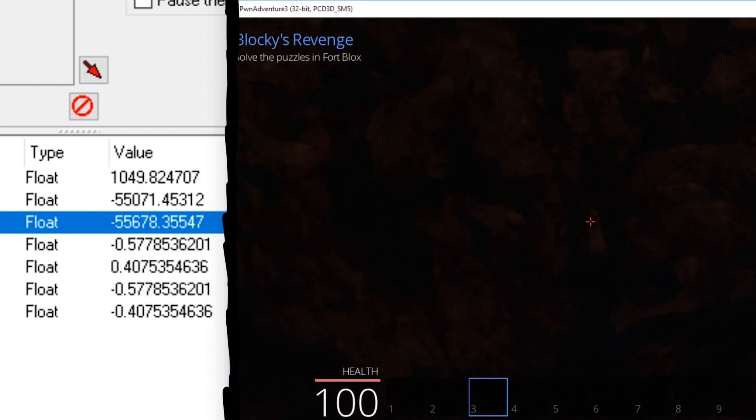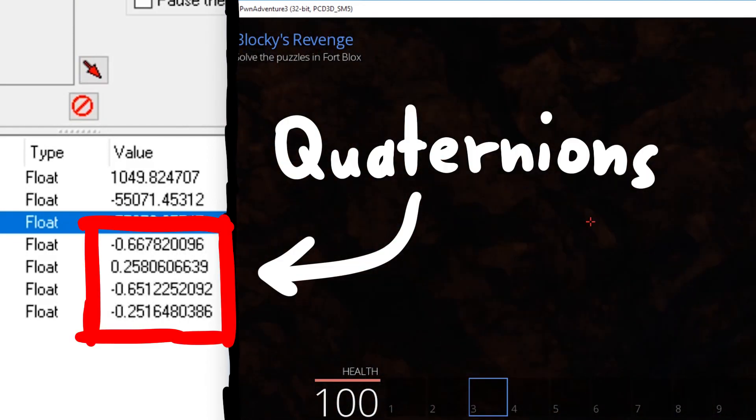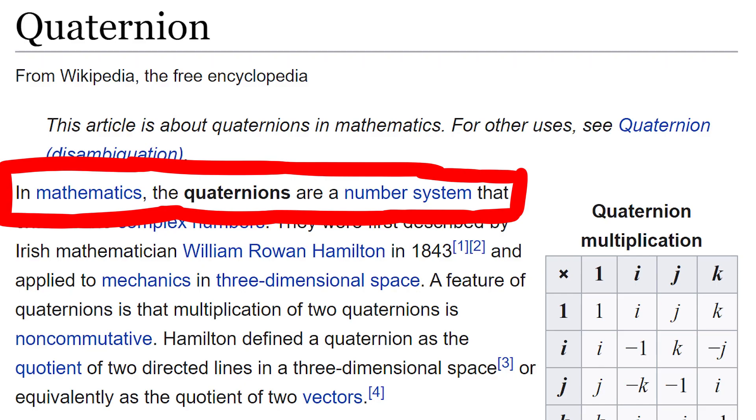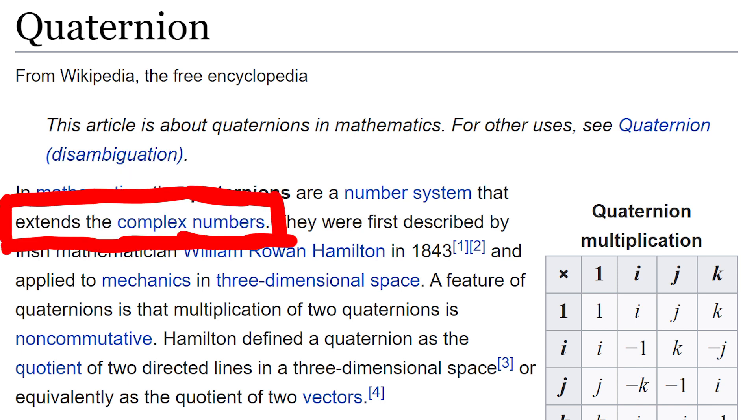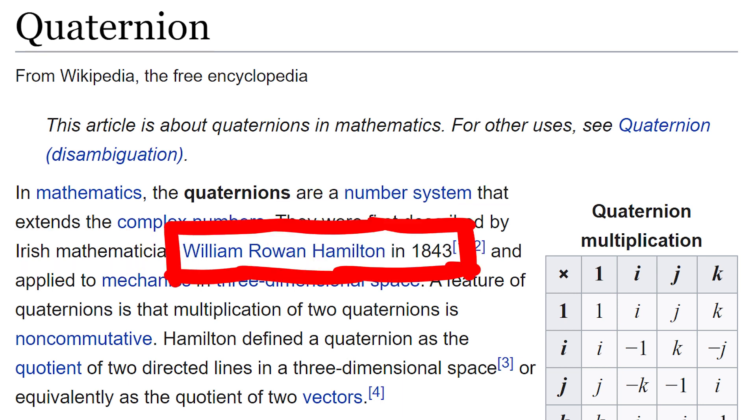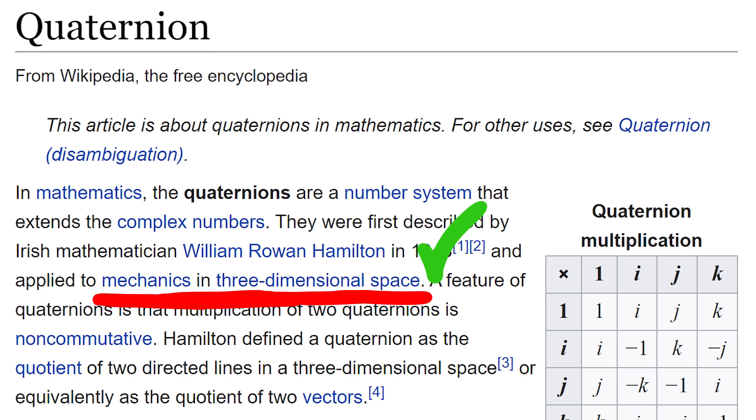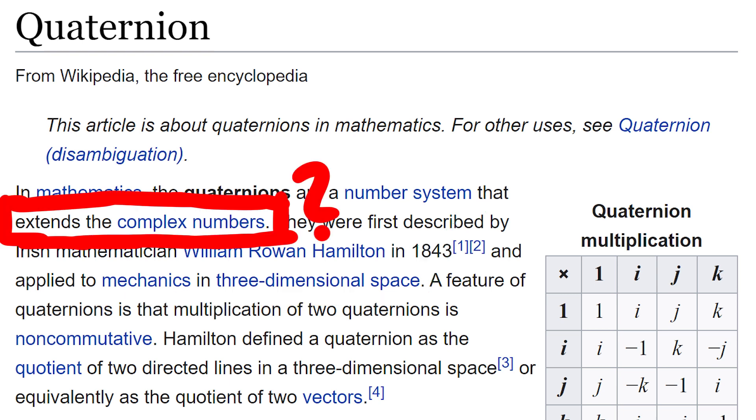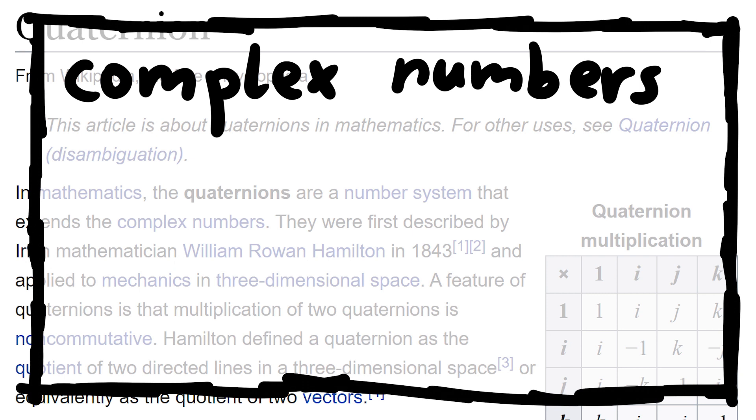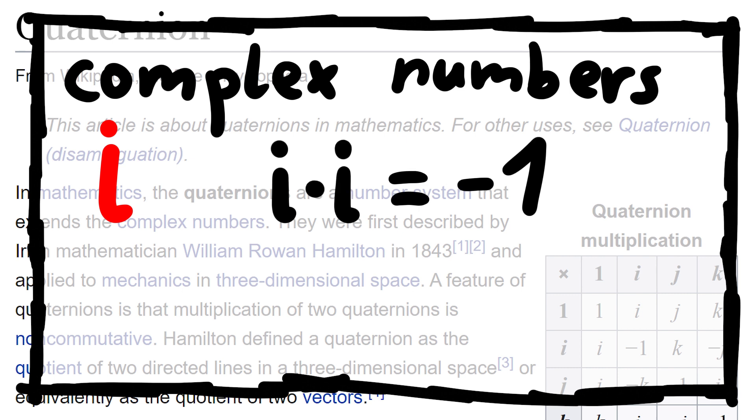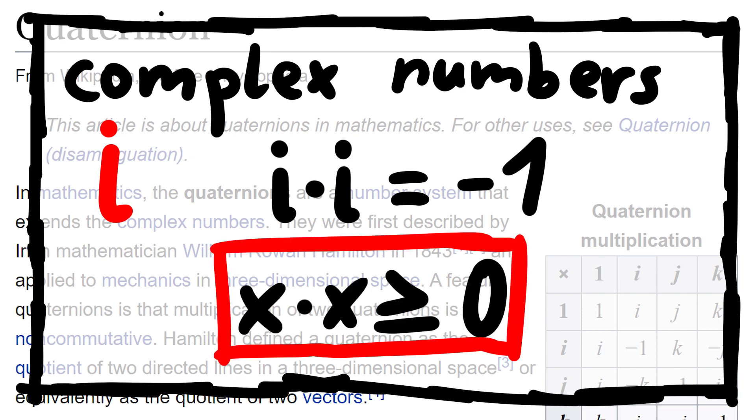But of course it's not. What we have here are quaternions. In mathematics the quaternions are a number system that extends the complex numbers. They were first described by Irish mathematician William Rowan Hamilton in 1843 and applied to mechanics in 3-dimensional space. Mechanics in 3-dimensional space, that sounds about right. But what does it mean to extend the complex numbers? If you had complex numbers in school, then you know about i. i is defined to have this interesting property that squaring i, so i times i, results in minus 1. Normally numbers don't do this. Squaring any number, be it negative or positive, the result is always positive. So that's why i is so interesting.